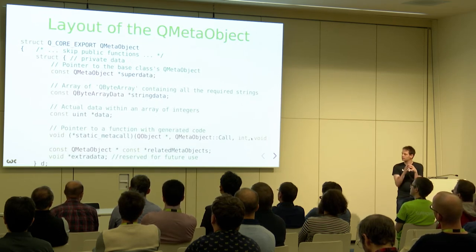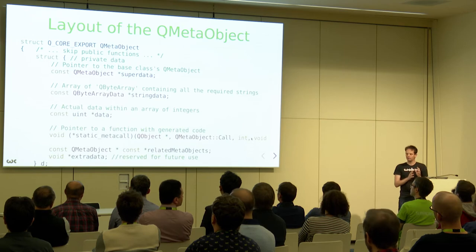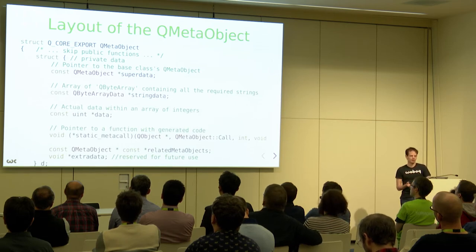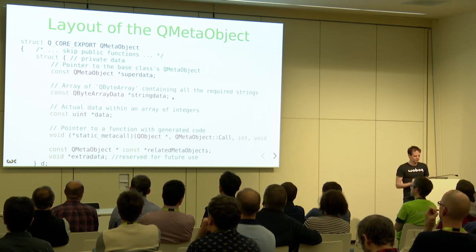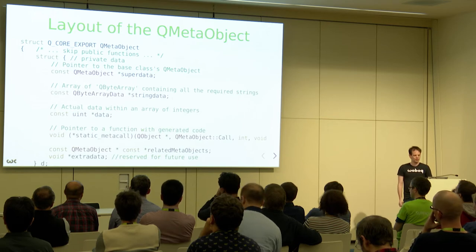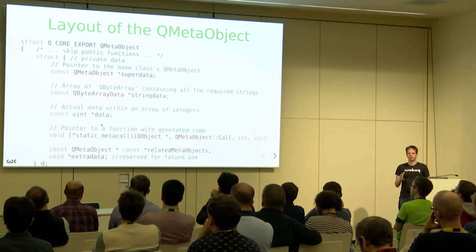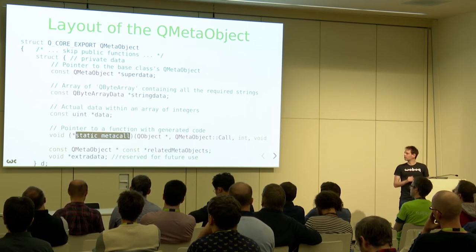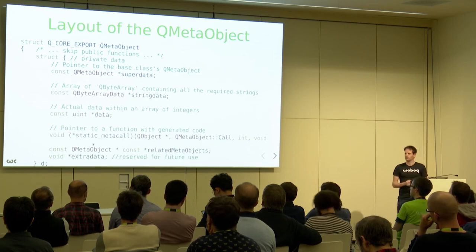The meta object itself is generated by MOC and contains a pointer to the parent meta object. It contains a bunch of strings — a QByteArray data structure — which is generated inline so you don't need to allocate new data. It also contains an array of integers with the actual data, and a pointer to a static function that contains the actual generated code, which we will see later.